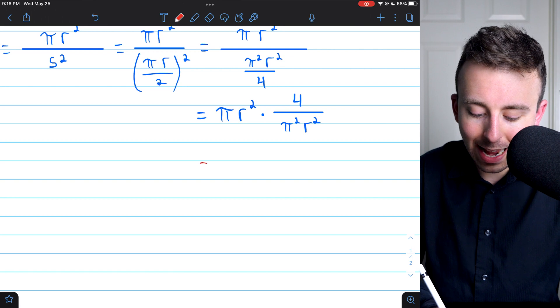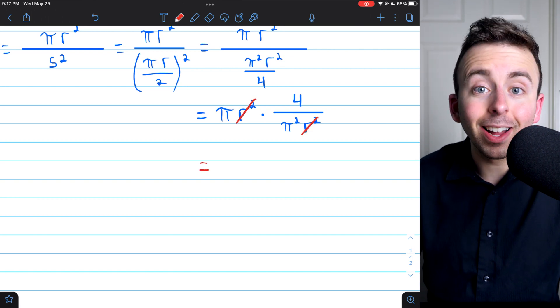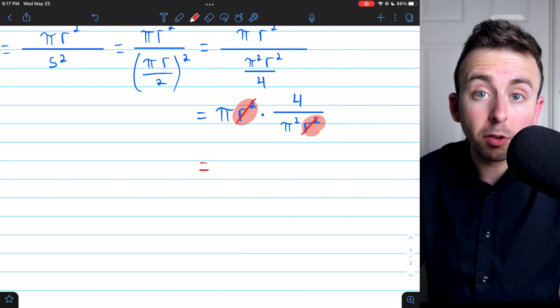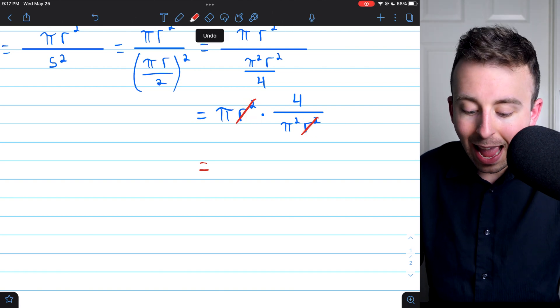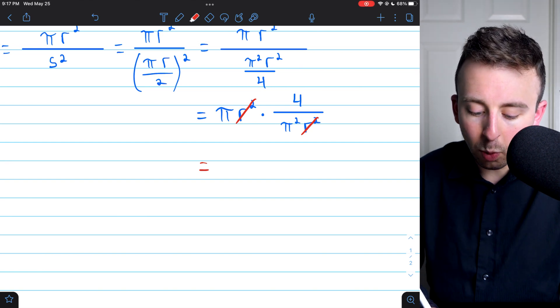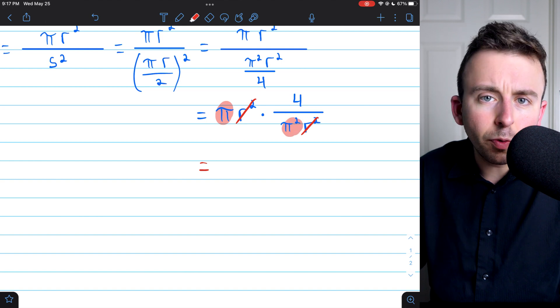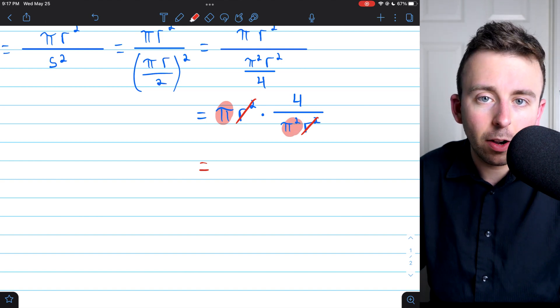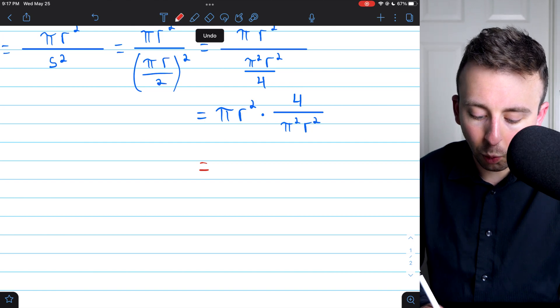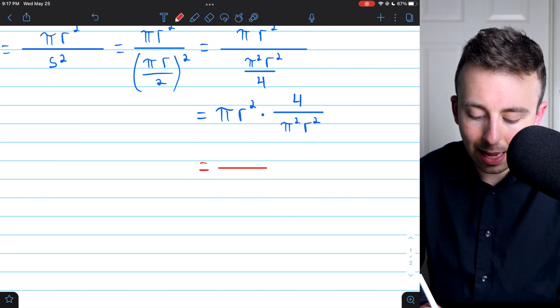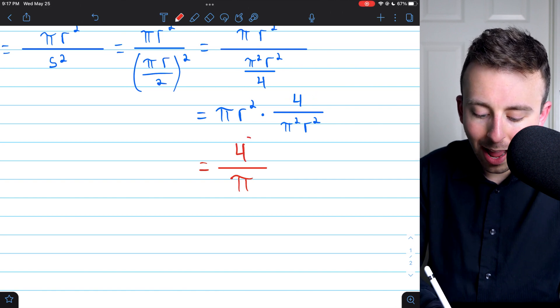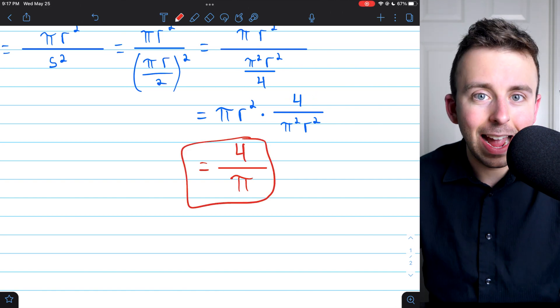And now we're just about done, so I'll write this final answer in red. The r squareds are going to cancel out because we've got an r squared up here and an r squared in the denominator, and a factor of π is going to cancel out. We've got a π up here, we've got two factors of π in the denominator. So we can cancel out one of those. It's still going to leave us one factor of π in the denominator. And then in the numerator, we're just left with 4. And that is our answer.